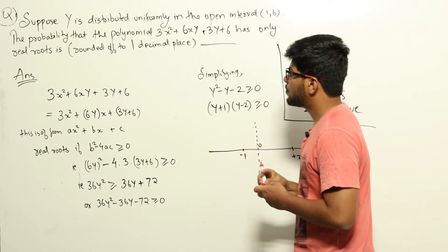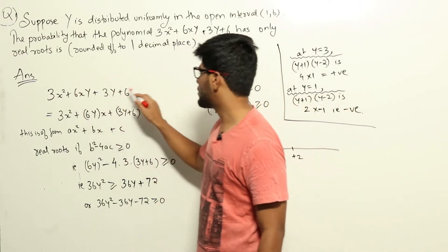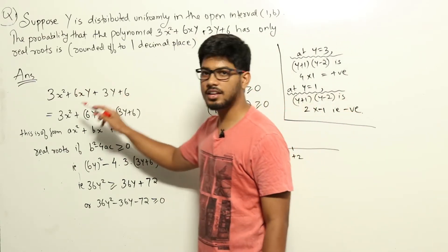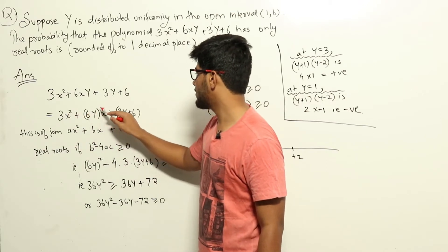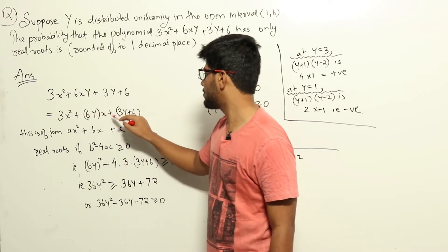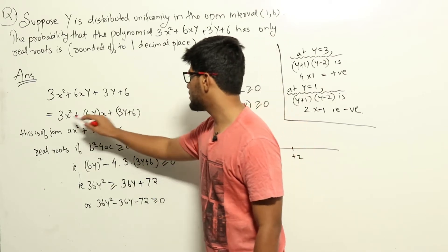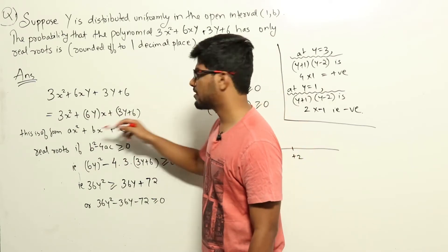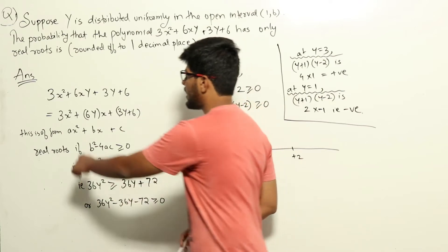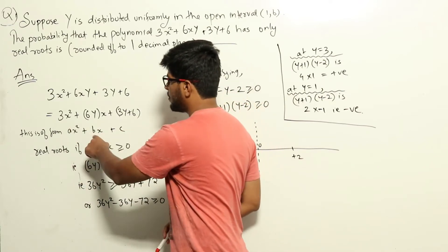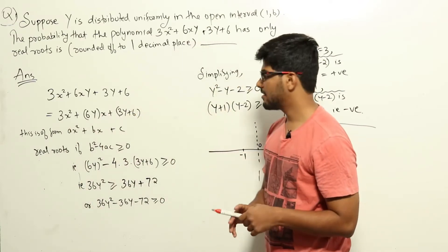The polynomial 3x² + 6xy + 3y + 6 can be rewritten as 3x² + 6y·x + (3y + 6). This is a quadratic equation of the form ax² + bx + c, where a = 3, b = 6y, and c = 3y + 6.